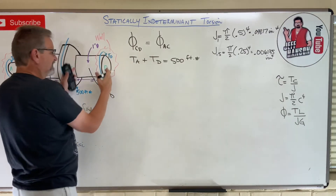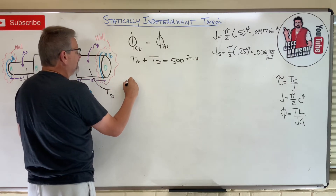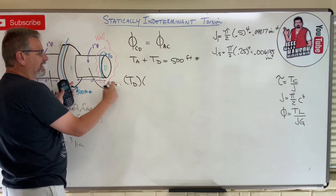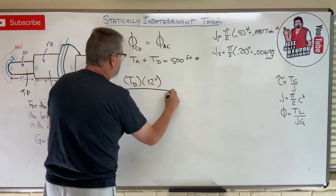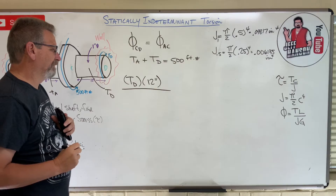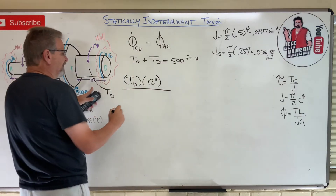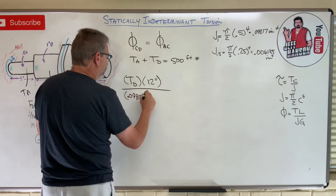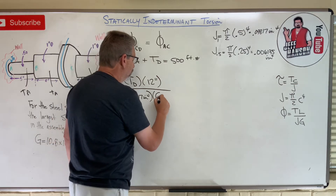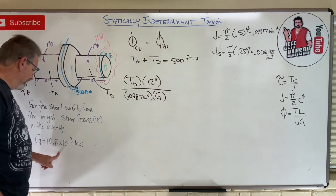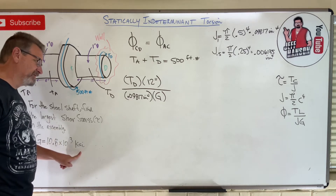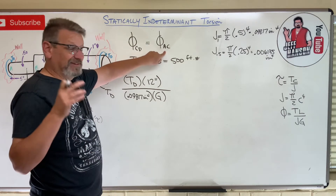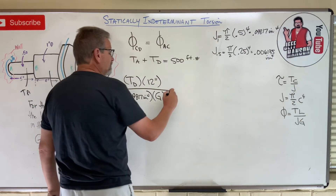Let's write the phi equations. Starting with section CD: phi_CD = TL/JG = (TD × 12 in) / (0.09817 in^4 × G). The length of section CD is 12 inches and it's a 1-inch diameter shaft. G is given as 10.8 × 10^3 ksi. I'm noticing that G appears in every term, so G is going to divide out.